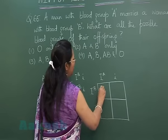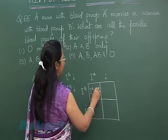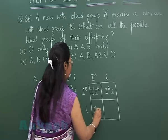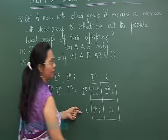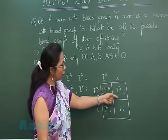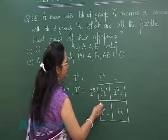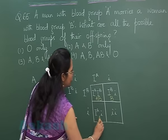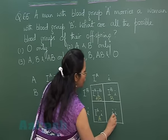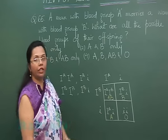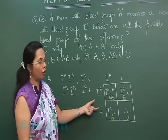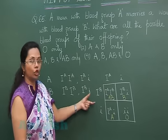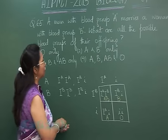One combination would give blood group AB, another gives B, another gives A, and the last one gives O. So out of these four combinations, we have blood groups AB, B, A, and O. That means all four combinations are possible if the parents are of blood group A and B, provided both of them are heterozygous.